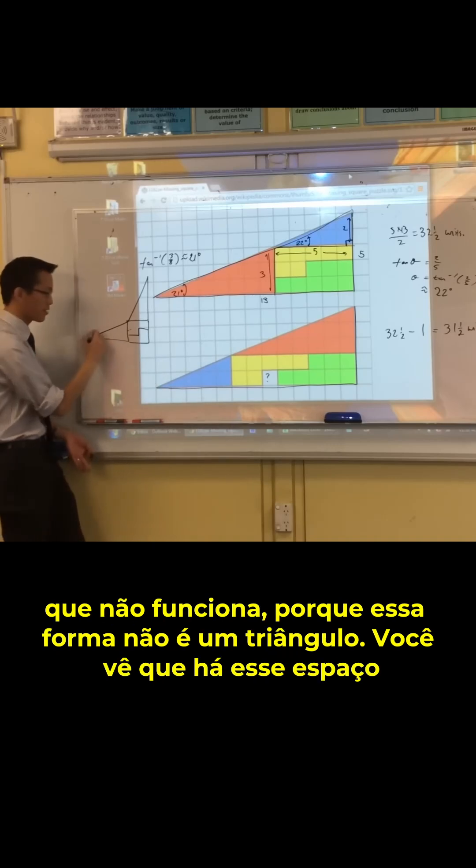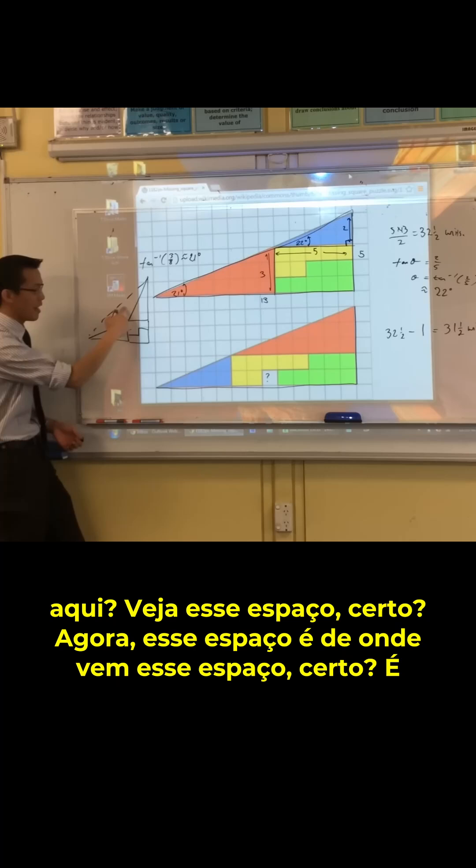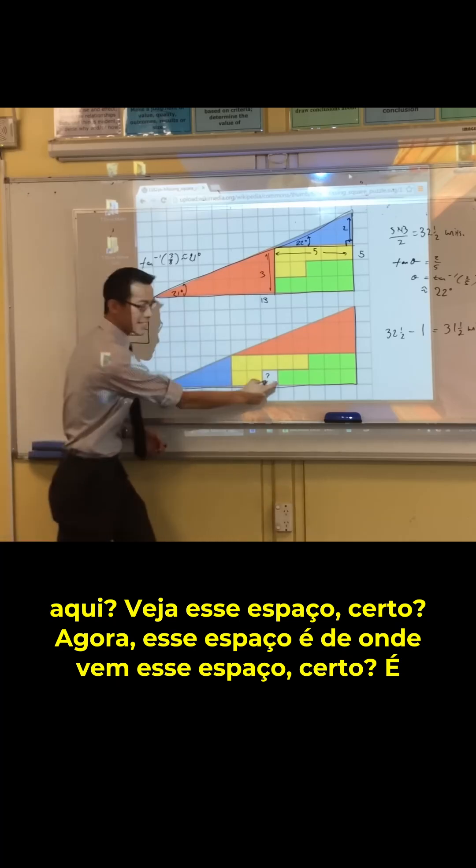You're like, of course it doesn't work, because this shape is not a triangle. You see there's this gap in here? See this gap, right? Now that gap is where this gap comes from, right?